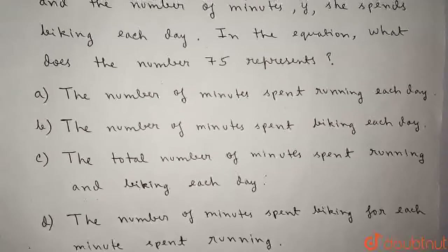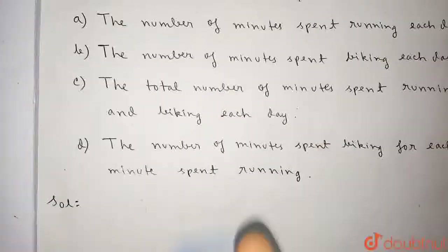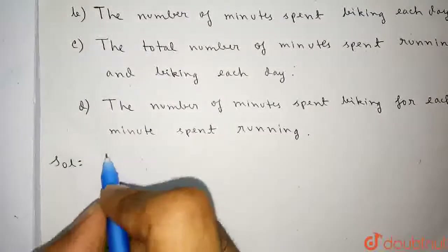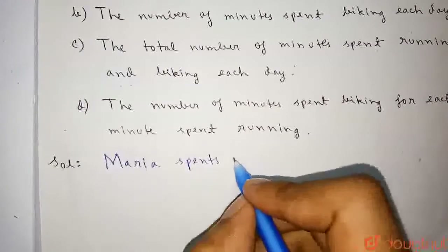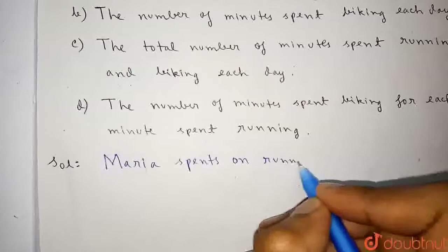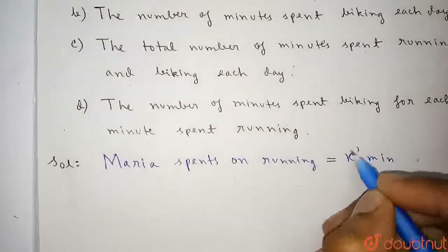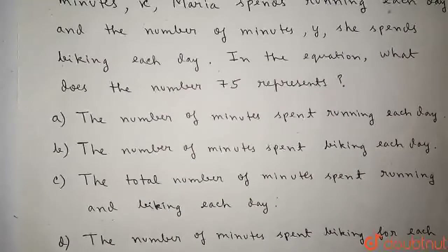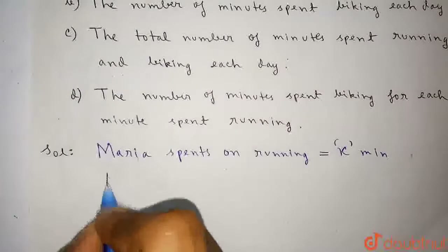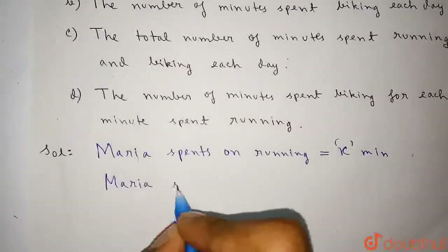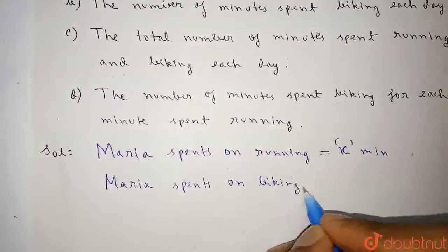It is said that the number of minutes Maria spends running is x, so Maria spends x minutes on running. And also, it is given that Maria spends y minutes for biking each day, so Maria spends y minutes on biking.